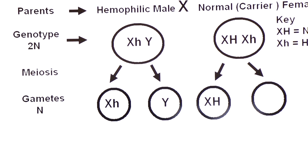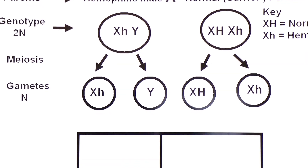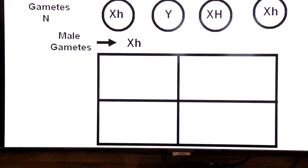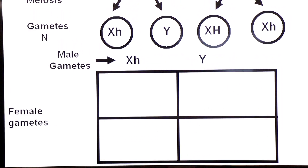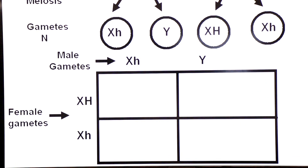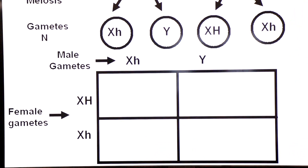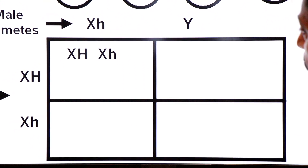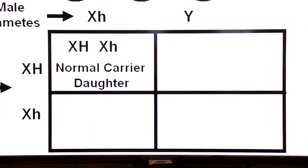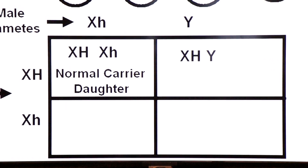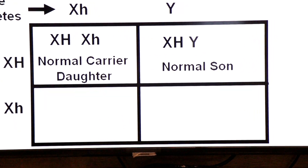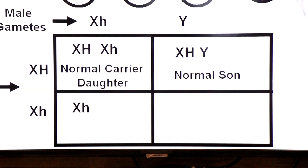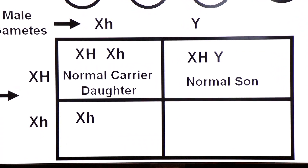From the female: X capital H goes to one ovum and X small h goes to another ovum. In the Punnett square, male gametes (X small h and Y) on top, female gametes (X capital H and X small h) on the left. First box: from left X capital H and from top X small h — that will be a normal carrier daughter. Second box: from top Y and from left X capital H — that will be a normal son, because capital H is normal and Y has no hemophilia allele.